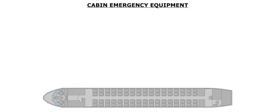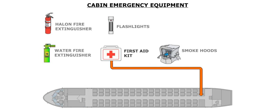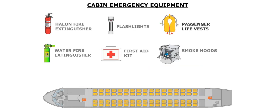Cabin emergency equipment consists of portable fire extinguishers, smoke hoods, flashlights, and a first-aid kit. In addition, a life vest is stowed in a pouch under each passenger seat and at the cabin crew stations.